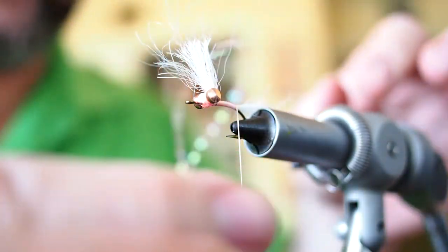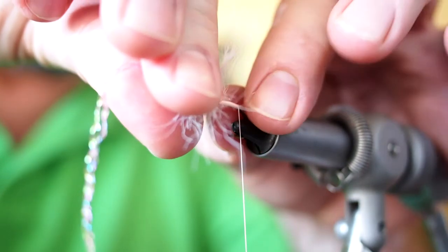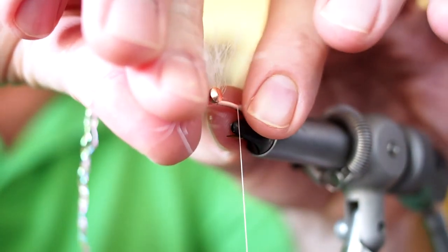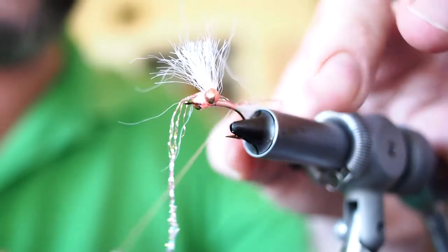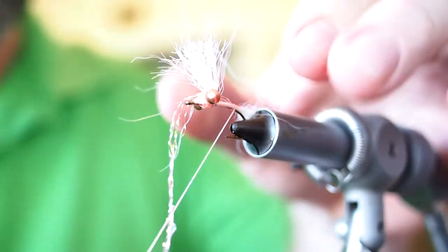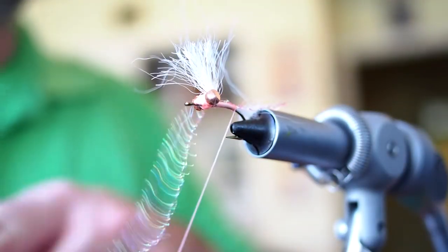Fold it in half to create a small loop, and then place that loop on top of the hook and have it extend on either side along the tail. So essentially you're trying to get half the strands on one side of the hook and the other half on the other.